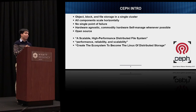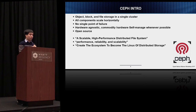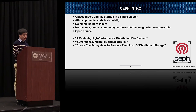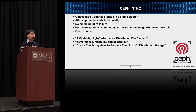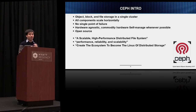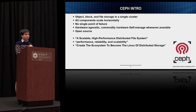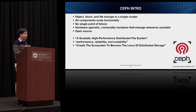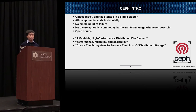Ceph must require a very common software feature, and all code must be open source — for example, erasure coding or anything else. The three phases of Ceph's vision: at first, Ceph wanted to become a scalable, high-performance distributed file system, such as GlusterFS or Lustre. Then, in the last decade, Ceph focused on performance, reliability, and scalability. And in recent years, the vision is to create an ecosystem and become the Linux of distributed storage.